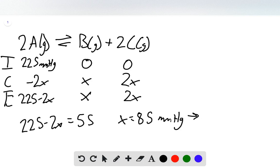However, we want to convert this to atmospheres, so we divide by 760, and we get 0.1118 atmospheres. And so this is the value of our X.